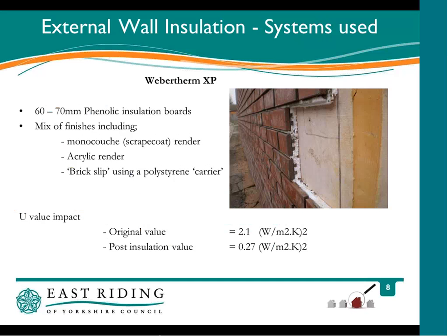The system we used was Webbertherm XP, with 60 to 70 millimetres of phenolic insulation boards, with a mix of finishes including monocouche and scraped render, and the one I particularly liked — the brick slip. We used the insulation board, the polished iron carrier, and then the brick slip finish. Typical U-values were reduced from 2.1 down to 0.27.